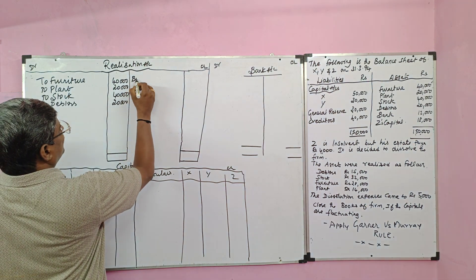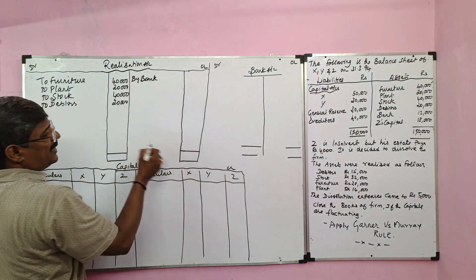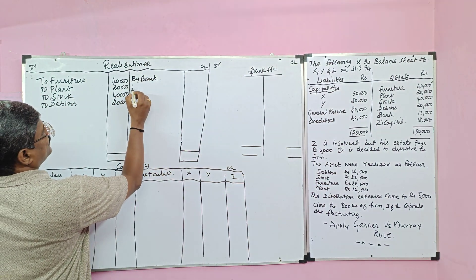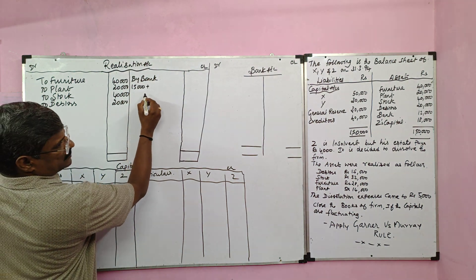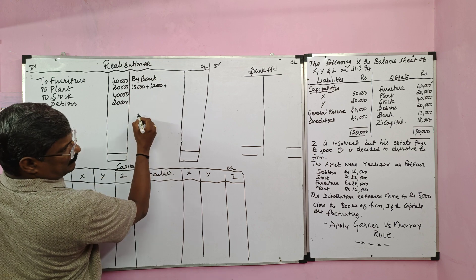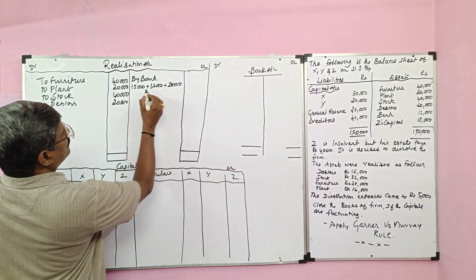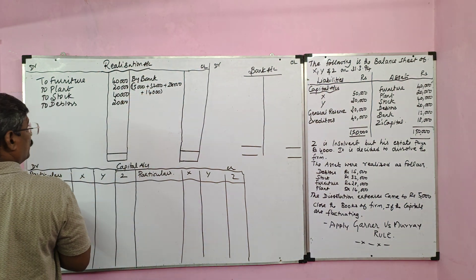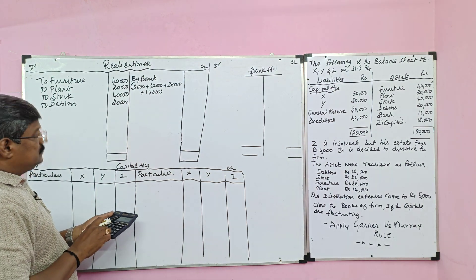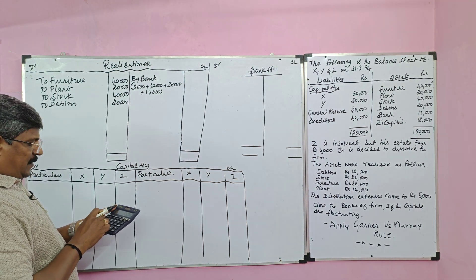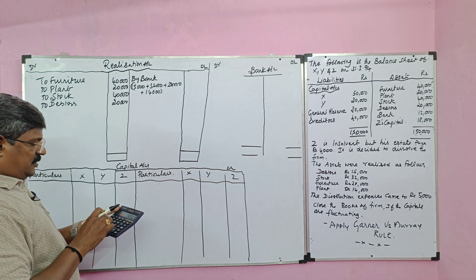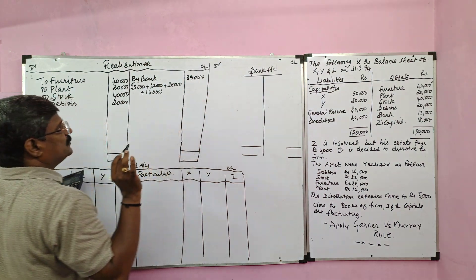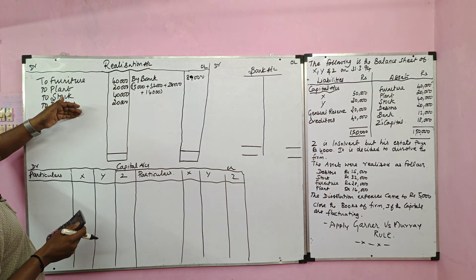Then we are going to realize these assets. The entry is: Bank Account debit to Realization. The assets are realized as given in the adjustments — debtors realized 15,000, stock realized 32,000, furniture 28,000, and plant realized 14,000. So all assets realized for a total of 89,000. First entry: Realization Account debit to all assets at book value. Second entry: Bank Account debit to Realization.